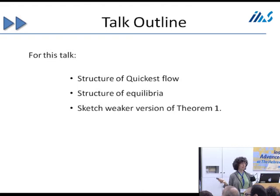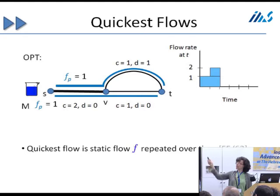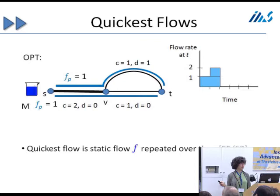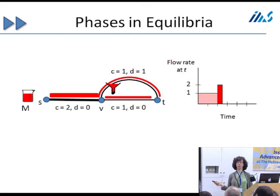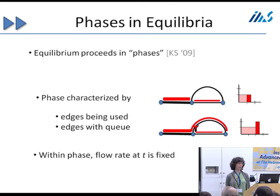I won't be able to give much of the proof but I'll give some ideas. I'll talk about the structure of the quickest flow, the structure of equilibria, and sketch a much weaker version of our main theorem. A quickest flow is a static flow repeated over time — essentially a flow of value one on the top path and one on the bottom path, from time zero to the last time it can reach the sink. In equilibria, we don't start using all the paths at the same time; we start with the least-delay path until the queue grows large enough, then start using another path. Equilibria proceed in phases characterized by the set of edges used and edges with queues.